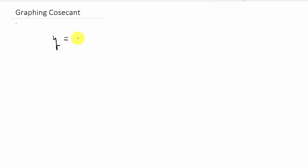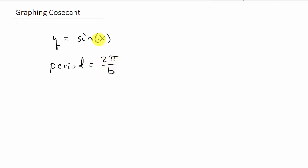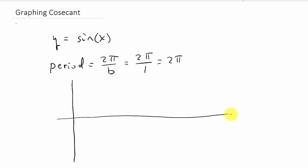So if we have y equals sine of x, as long as you can graph this you can graph a cosecant. The period is equal to 2π over b, and b is the number in front of x. In this case b is 1, so our period is 2π. We're going to graph it over one period, from 0 to 2π, and we need to break this up into four equal intervals.